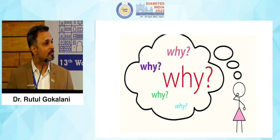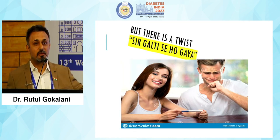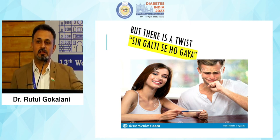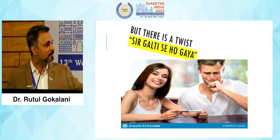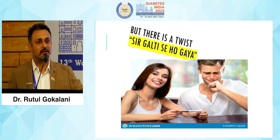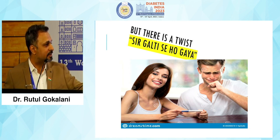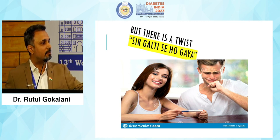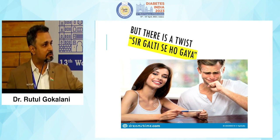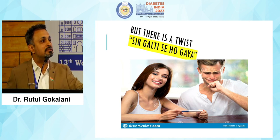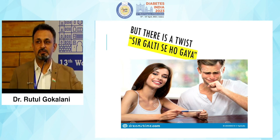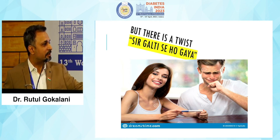Why is it that important? In most of our type 2 diabetic patients, you might have heard one day — 'galti se ho gaya' — when they come up with HbA1c of 8.5, 10, or 11. We have even seen type 1 diabetic patients with HbA1c of 11 or 12 who say they have already conceived. We commonly see this when patients are referred from gynecologists, and it is then our call whether to continue the pregnancy or not.